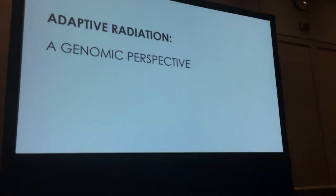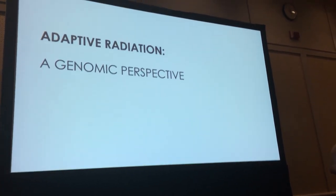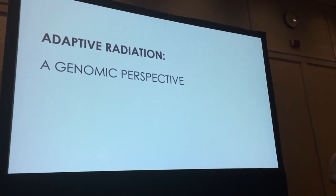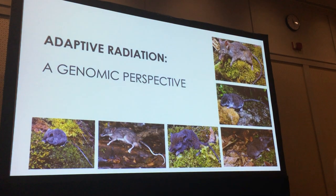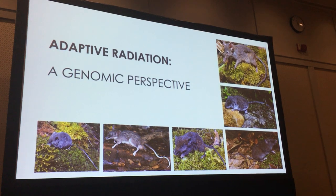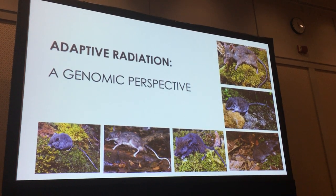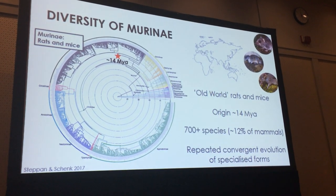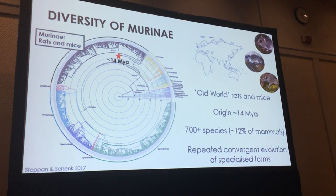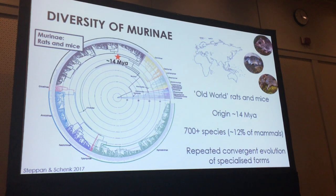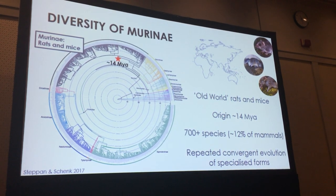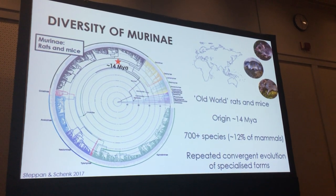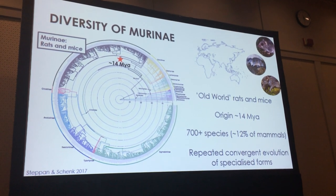Now that we can generate large amounts of genomics data — not just from a few example species but potentially from across the diversity of adaptive radiations — there's a nice opportunity to start thinking about adaptive radiation from a genomic perspective. I'm going to be talking about murine rodents in this context. Murine rodents are part of the subfamily Murinae, the old world rats and mice, with an origin around 14 million years ago. They make up 12% of all mammal species and are a really interesting group because there's been rapid diversification in a relatively short amount of time, as well as repeated evolution of convergent specialised forms and a lot of eco-morphological diversity.